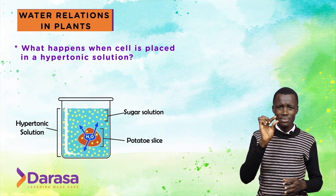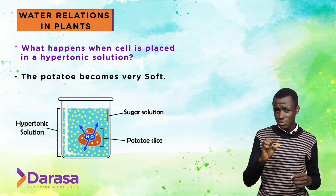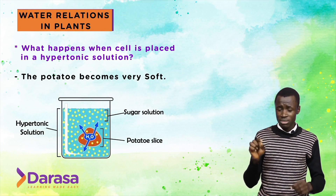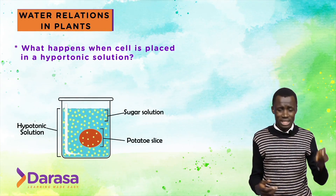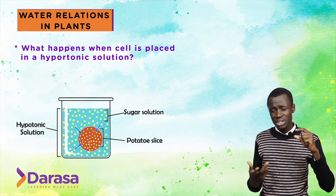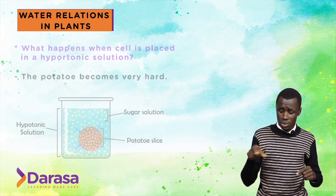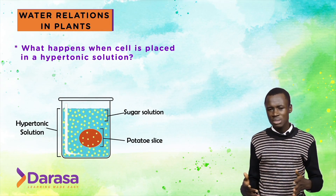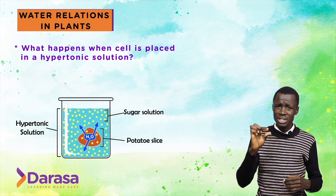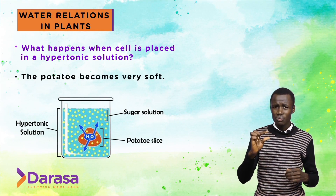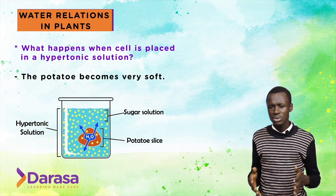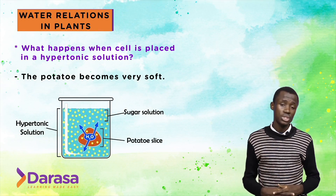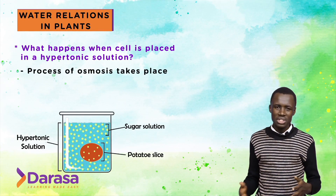After some time, you will realize that the potato cube is flaccid — very soft and tender. If you try to press it, it gives easily. In comparison, a potato cube placed in a hypotonic solution would feel very hard. After about 30 minutes to one hour in the hypertonic solution, the potato cube becomes smooth and very soft. Let me explain the sequence of events.